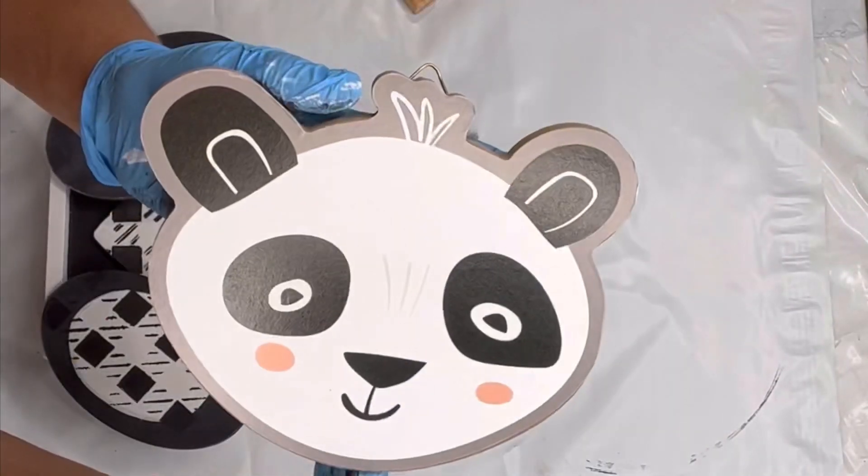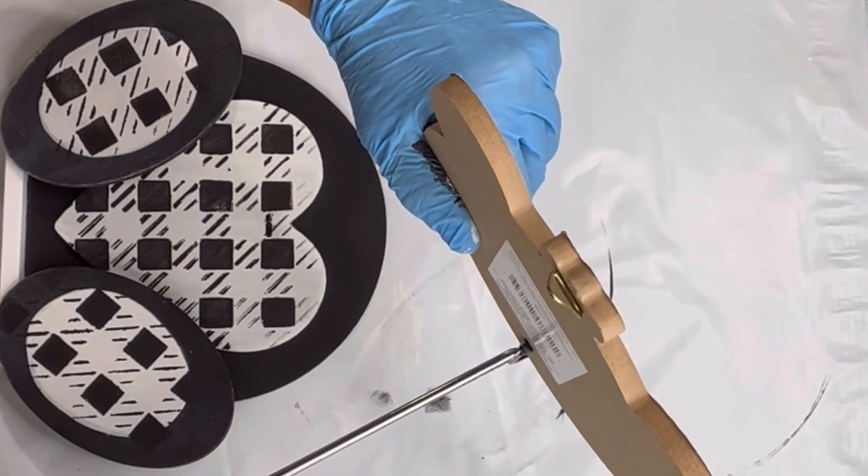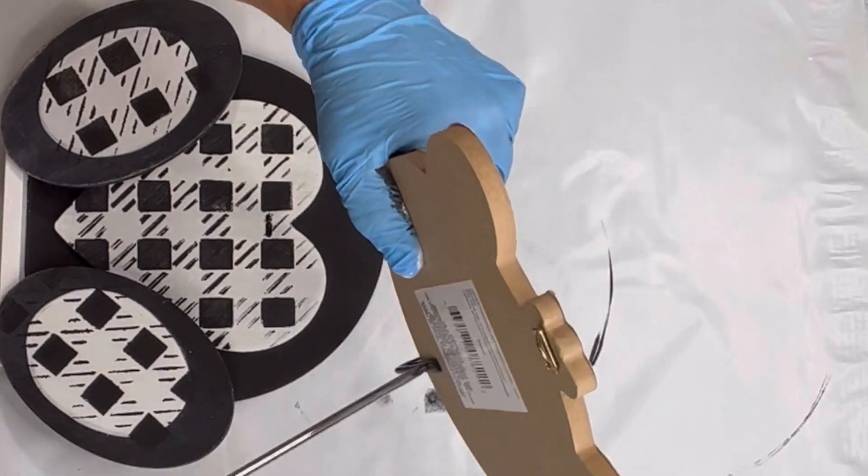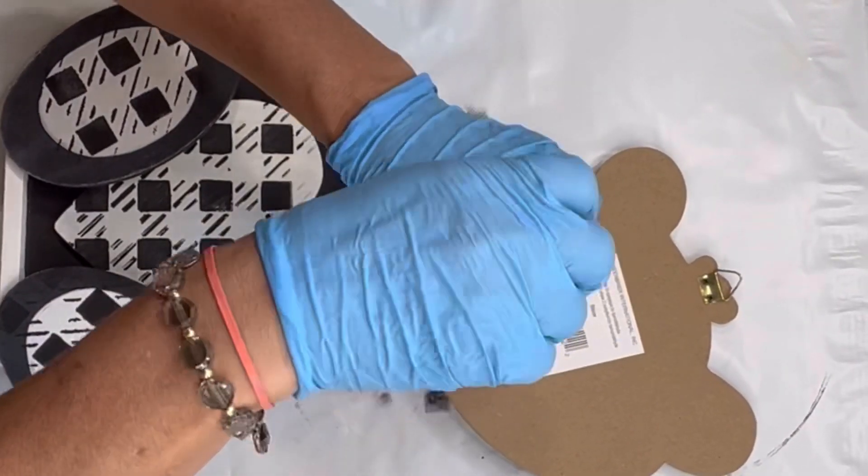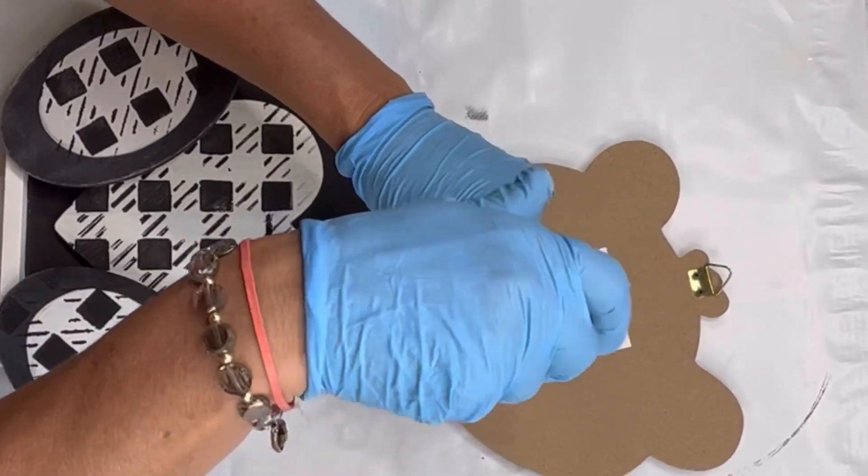One to the left and one to the right. I found this panda head at the Dollar Tree, and I'm just going to remove the little hanger that comes out from the bottom.